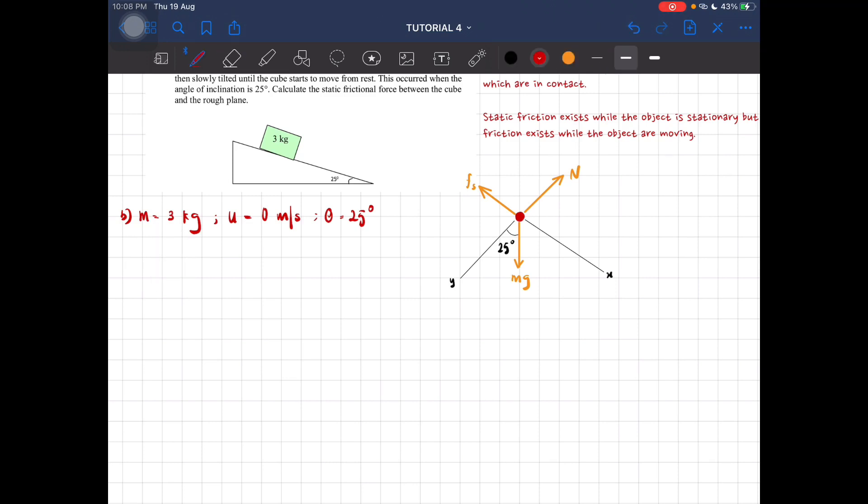We are looking at the x components but we are looking for the static friction force. So Fx equal to a equal to zero. This one is static, it hasn't yet moved. So mg sin 25 degrees minus fs equal to 0.